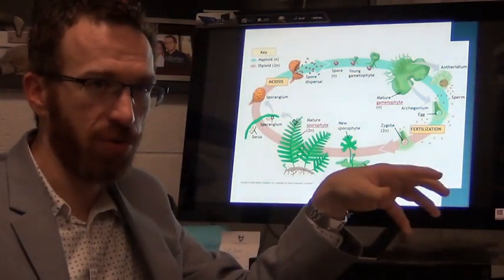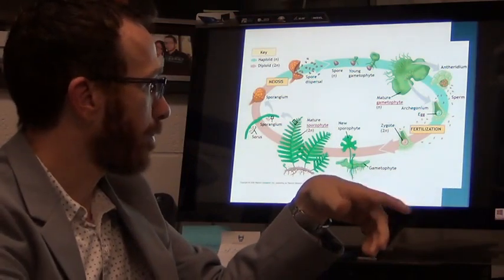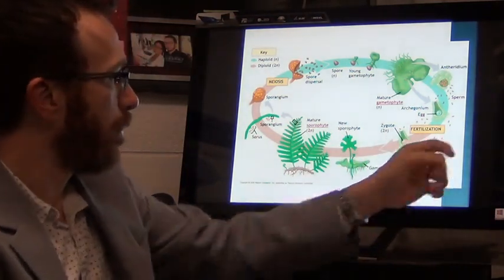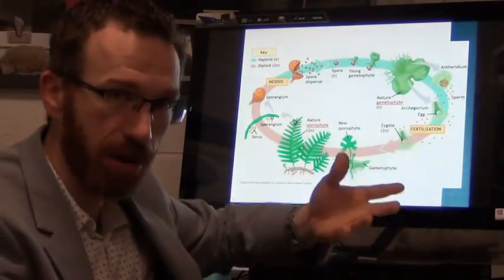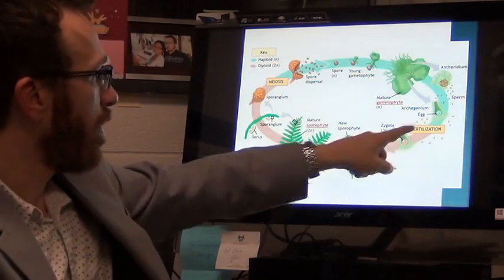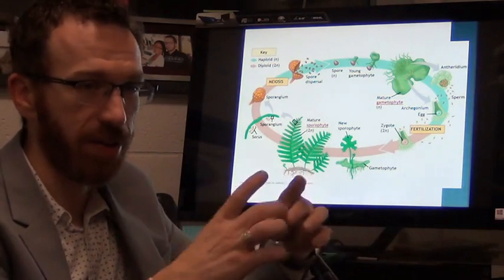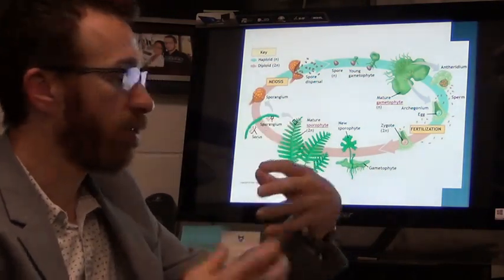The prothallium will release sperm. The sperm will either fertilize its own archegonia or swim away to fertilize other archegonia. They are flagellated, so it does need to be near water. It is water dependent, just like the bryophytes are.